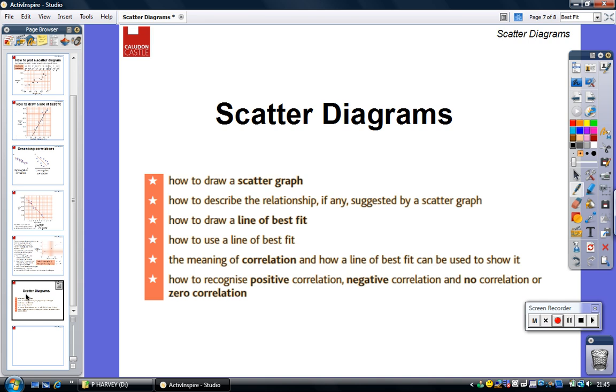So during this revision tutorial, we've had a look at how to draw a scatter diagram, how to draw a line of best fit, how to use that to read off values, and we've had a look at positive and negative correlation, and we've also had a look at strong and weak correlations.